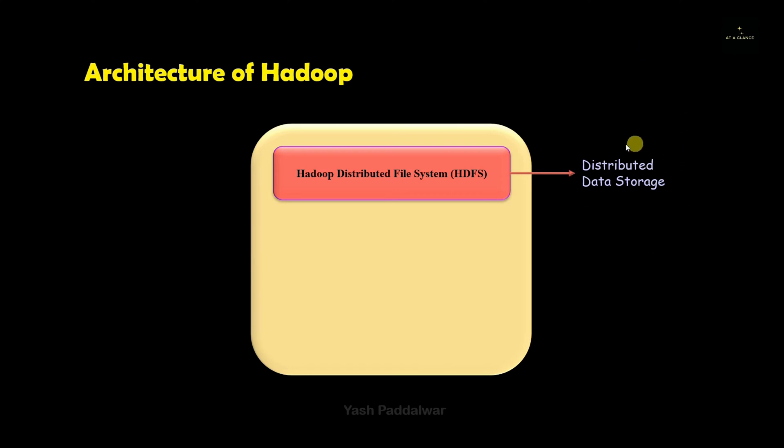Hadoop Distributed File System also includes an architecture which is master-slave architecture. This HDFS includes components like name node, secondary name node and data node. Each of these components perform different functionality and they work in coordination.